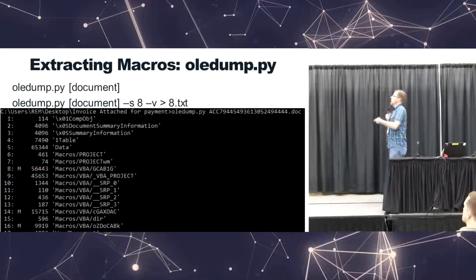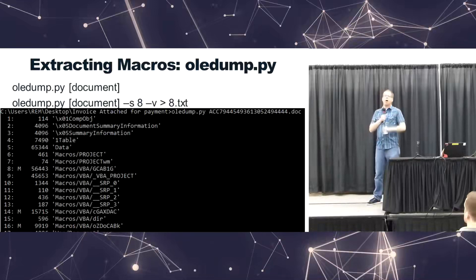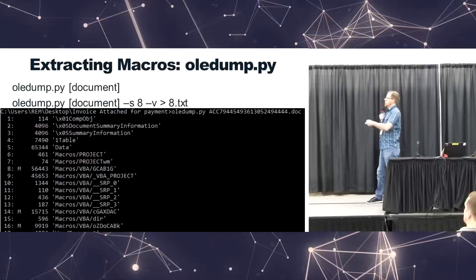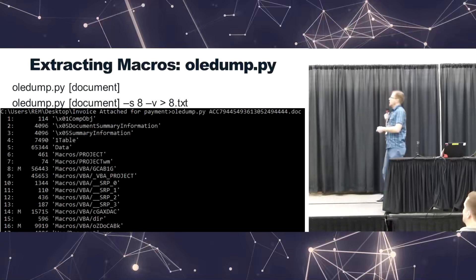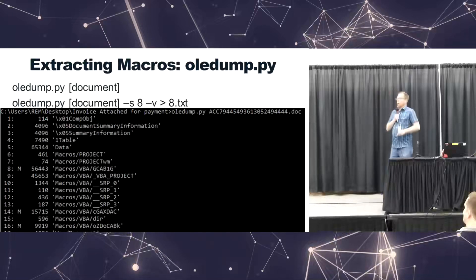Another really good tool is oledump, a Python script. It's good on .doc and .docx files, but importantly, Emotet lately has been using XML files disguised as .doc files — Office Malscanner can't handle those, but oledump can. It's simple to use: point it at the document and you'll see all the macros listed. If it has a capital M or lowercase m next to it, you want to extract those. Just choose the macro number, use -s for select, -v for verbose, pipe it to a text file, and you've got what you need.